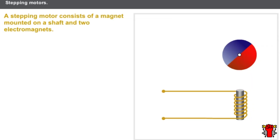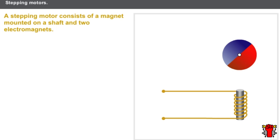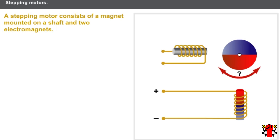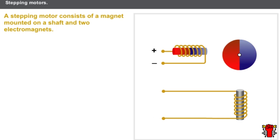Another type of actuator is the stepping motor. Consider a magnet mounted on a shaft with an electromagnet added. If the electromagnet is powered, a magnetic field is created which causes the magnet to rotate. By reversing the electromagnet's polarity, the other pole of the magnet is attracted. However, the direction of rotation cannot be predicted. To ensure rotation in the desired direction, a second electromagnet is added. The power supply of the two electromagnets makes it possible to control rotation of the magnet.